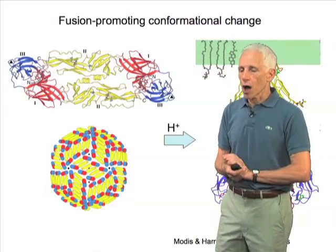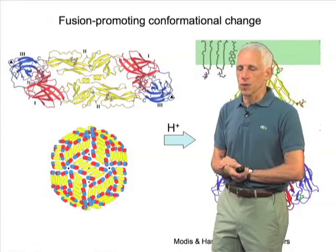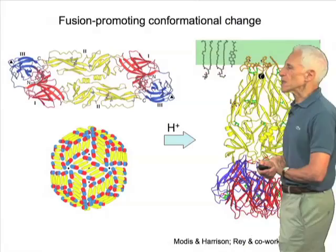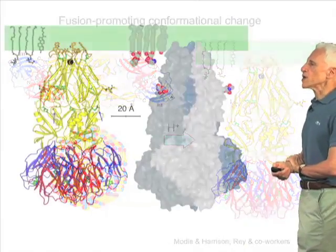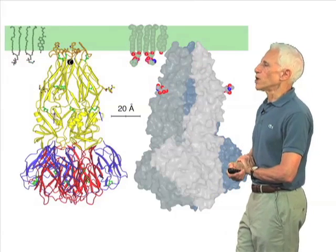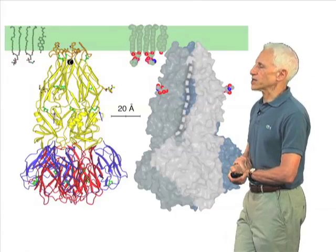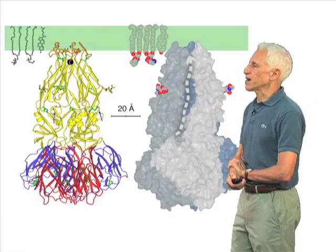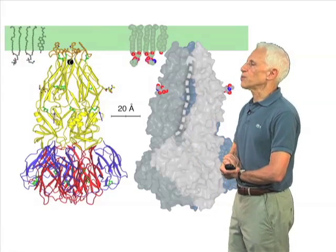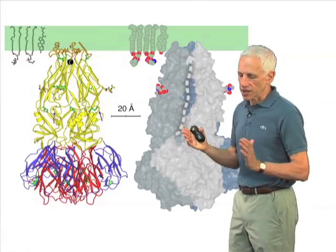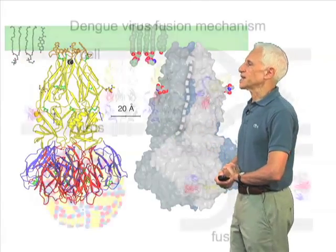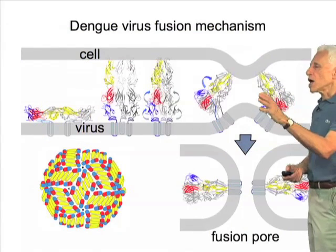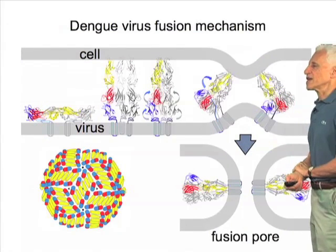In other cases, other signals are read out by the fusion mechanism. We can look at this in one more slide, where the interaction with the target cell membrane is shown, and there is a zipping-up process of the C-terminal part of the subunit that is part of the pinching together of the two membranes, leading to an elaborate bit of molecular machinery.